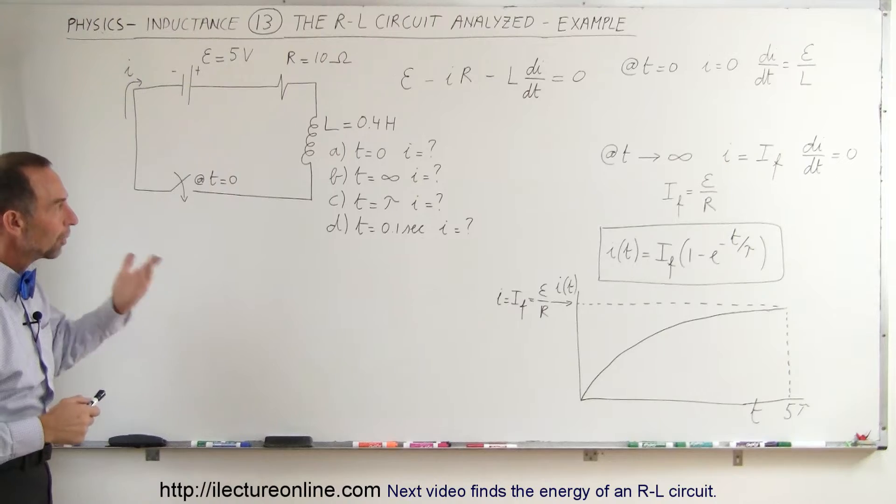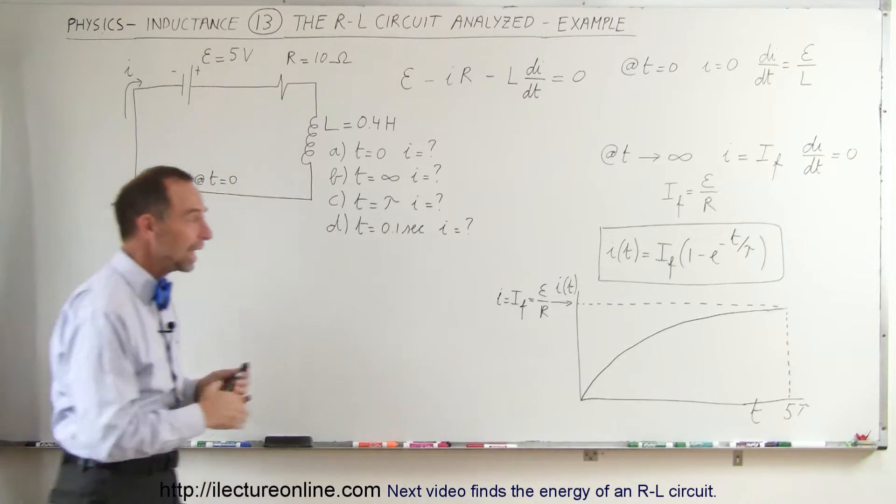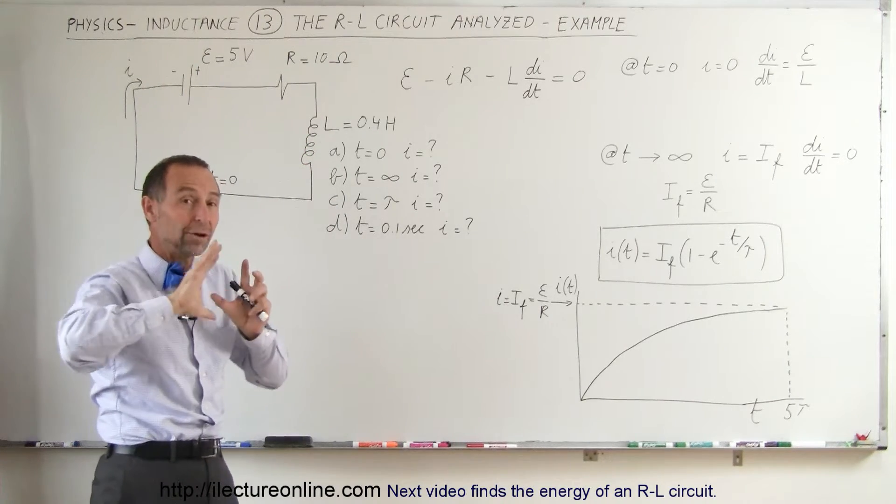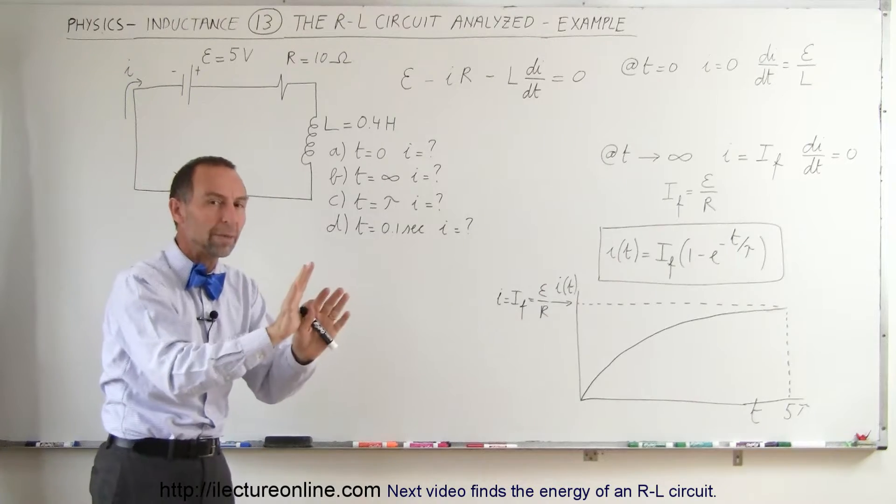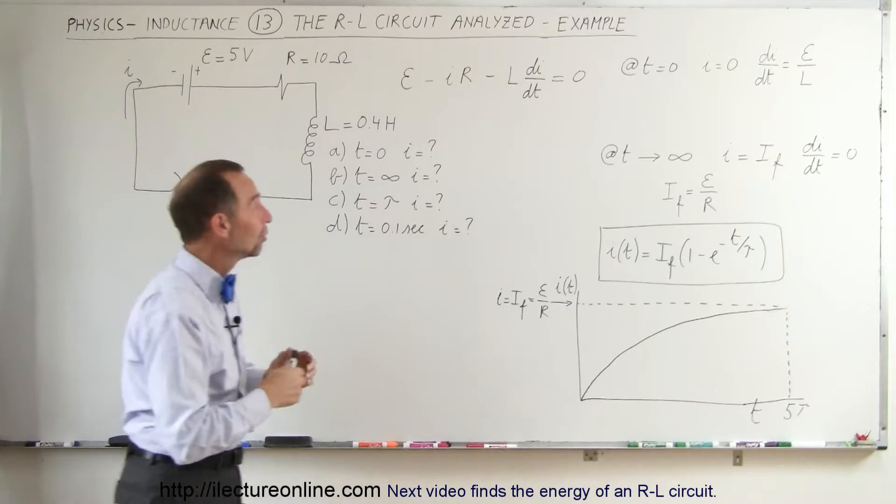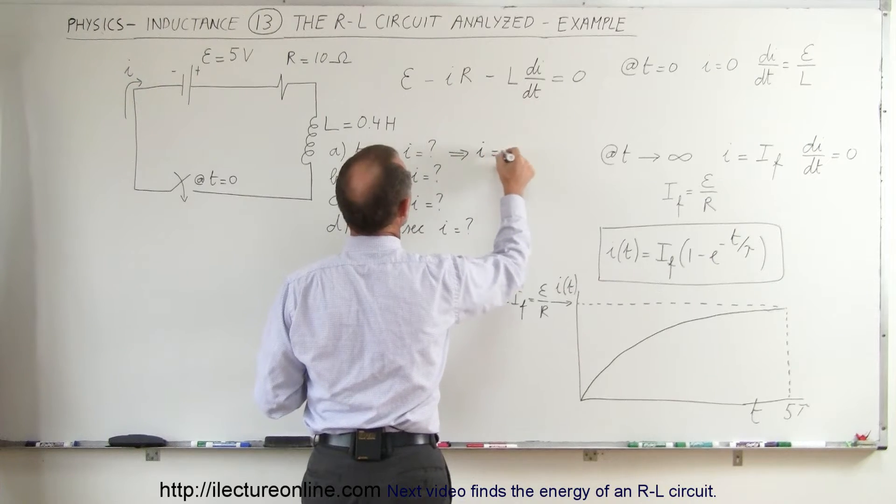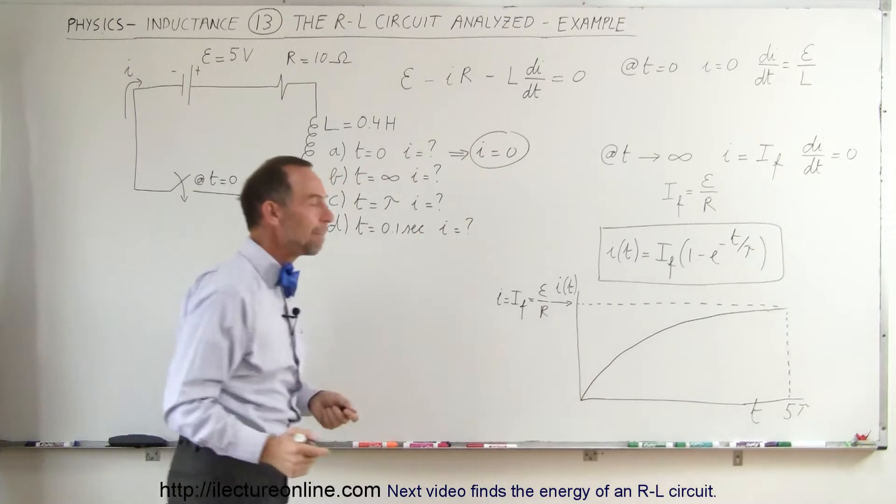So let's first do part A. At t equals 0, what is the current? Well, we already know that because there's inductor in the circuit and the moment the switch is closed and the battery tries to put current to the circuit, the inductor opposes that change, holds back the current, so at t equals 0, there is no current at all. So we can say that here, i equals 0 at t equals 0, which of course indicated by this curve.